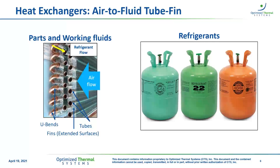Presumably you're familiar with tube fin heat exchangers and the role of the refrigerant. Just to make sure you're in the right place: on the left we have a copper tube fin heat exchanger. The very basic components are the tubes and the fins. Tubes are connected to each other with U-bends, and the heat transfer surface is extended by the fins. Through those tubes flows a working fluid, which is known as a refrigerant — and that's the topic of today's webinar. Shown here is a copper tube and aluminum fin assembly, which is fairly typical, and on the right are some refrigerant canisters.